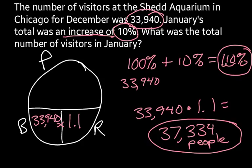Now, if we didn't use the 110% method but did it the other way, we'd find 10% of 33,940 and then add it to 33,940. The only problem that creates is sometimes mistakes happen with the addition. Using 110% saves us any tricky addition, because all we're doing is adding percentages.